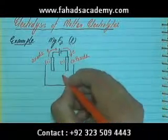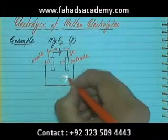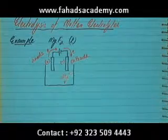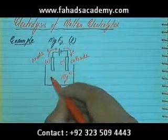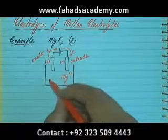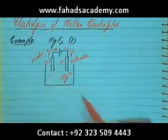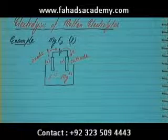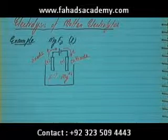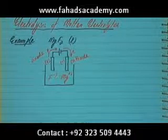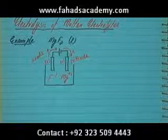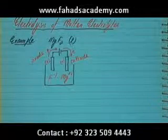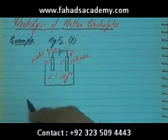When doing electrolysis of molten magnesium fluoride, there are two ions present. One is Mg²⁺ — it's in group two so the charge is +2 — and the other is fluorine F⁻, which is in group seven so the charge is -1. So the electrolyte contains Mg²⁺ ions and F⁻ ions.